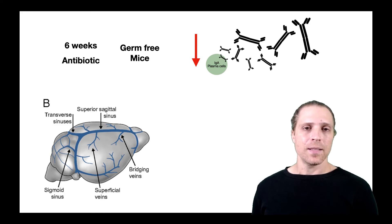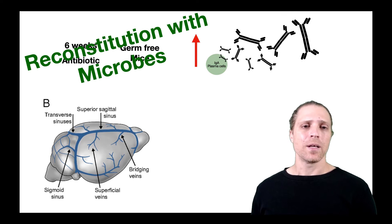And they saw that in these two different mouse groups there was a significant reduction of IgA-producing plasma cells. However, when the authors took these two groups of mice and reconstituted them with microbes, they saw an increase in IgA-producing and secreting plasma cells in the meninges.